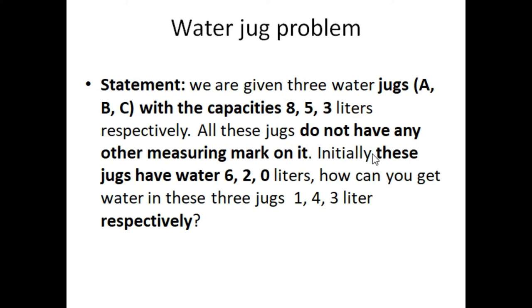We have three jugs with given capacities and there are no measuring marks on these jugs. Initially these jugs have water six, two, zero liters. It means our initial state is: jug A has six liters of water, jug B has two liters of water, and jug C is empty.